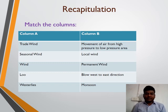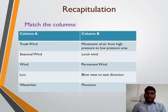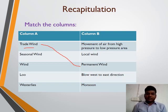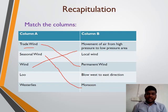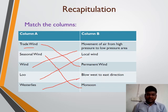Today we studied the types of wind: first, permanent wind; second, seasonal wind; and third, local wind. Now match the column — trade wind is a permanent wind; seasonal wind's example is monsoon wind; wind is the movement of air from high pressure to low pressure area; Loo is an example of local wind; and westerly wind blows from west to east direction.